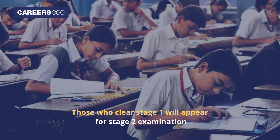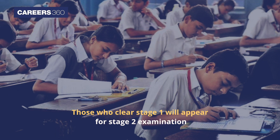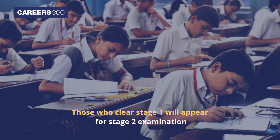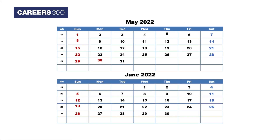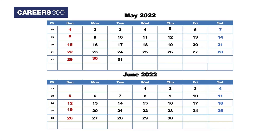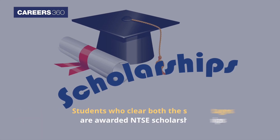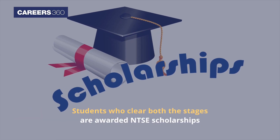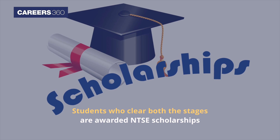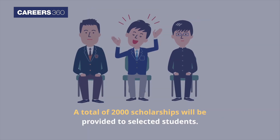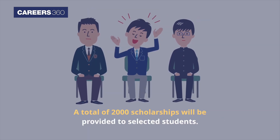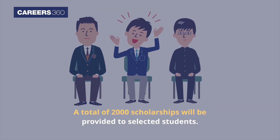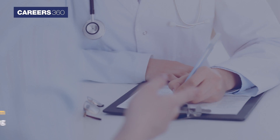Those who clear stage 1 will appear for the stage 2 examination, which is conducted in the month of May or June. Students who clear both stages are awarded NTSC scholarships. A total of 2,000 scholarships will be provided to selected students.